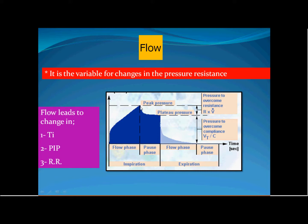The flow itself determines only the pressure resistance portion. That is why increasing the flow is not associated with barotrauma or volutrauma. Volutrauma and barotrauma result from changes in tidal volume, which lead to over-inflation of the alveoli when plateau pressure exceeds 35 cmH2O, potentially causing rupture.